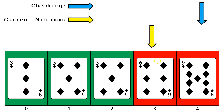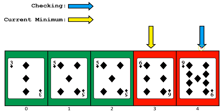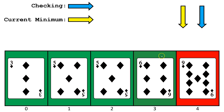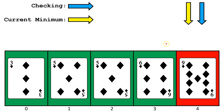Now we're going to set index 3 as the current minimum. We're going to check index 4 to see if it is smaller than the current minimum — it is not. So now we swap index 3 with itself and mark it as part of the sorted portion of the list. With selection sort, we don't have to sort the last value, because if every other value is in the correct place, then we know the last value will be in place too. So the algorithm will just assume that the last index is sorted.